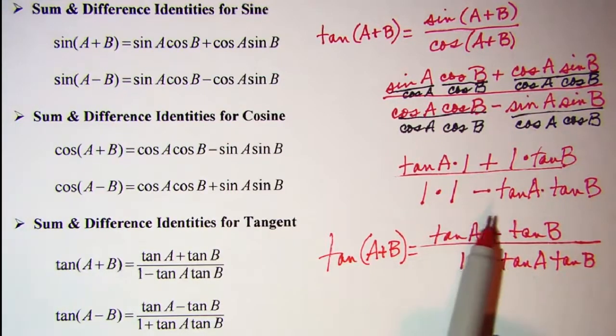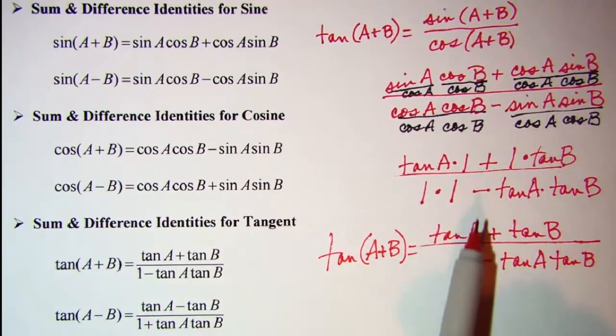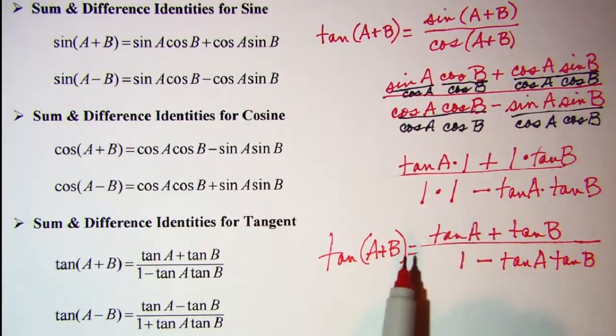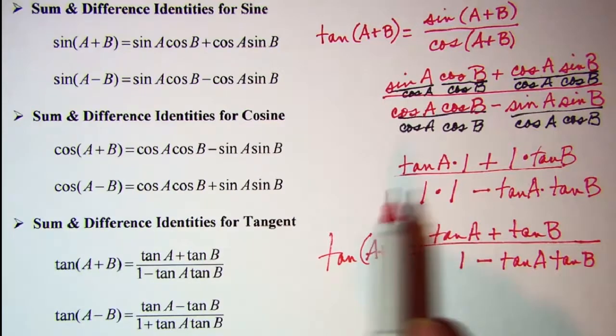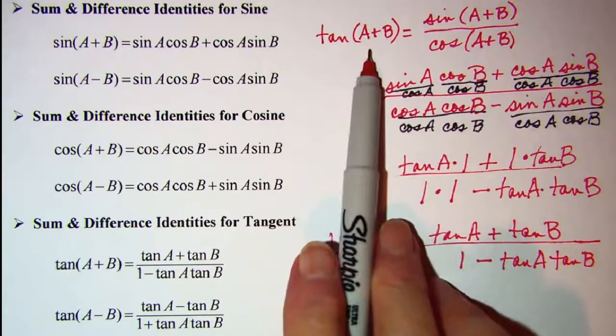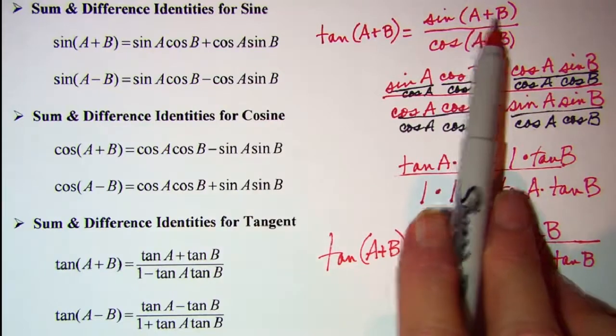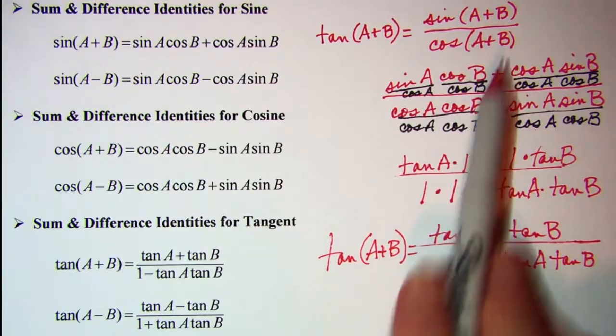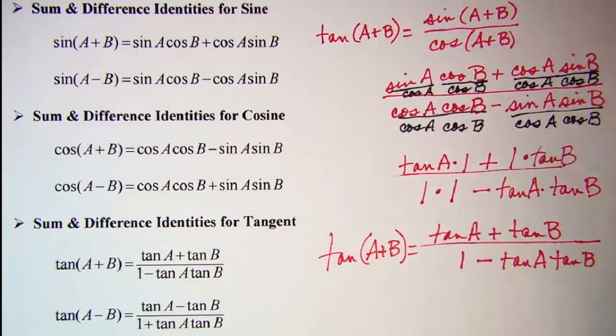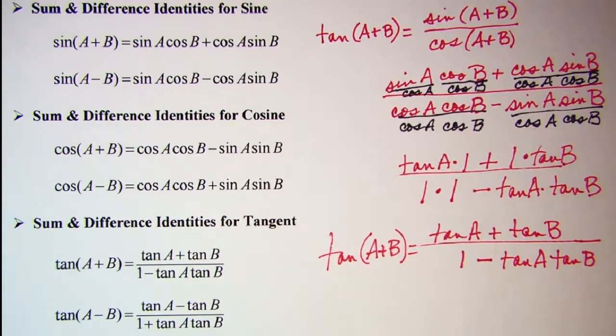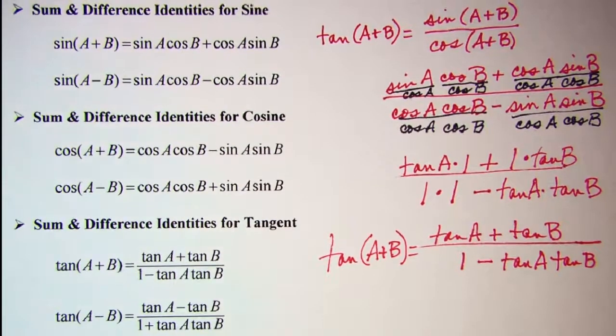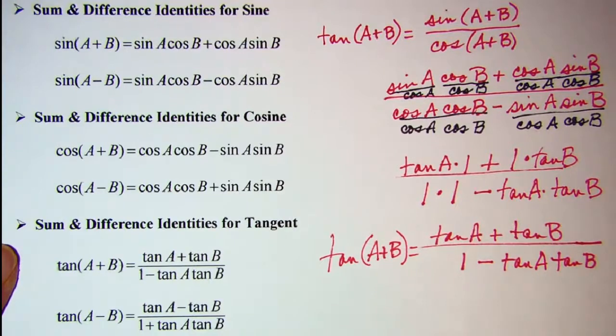It's pretty easy to develop that identity. And if you wanted the identity for tangent A minus B, you would just use sine A minus B over cosine A minus B and do the same division process.